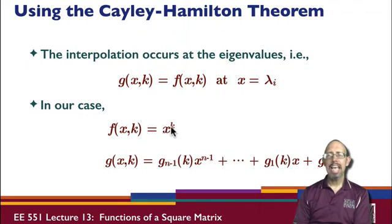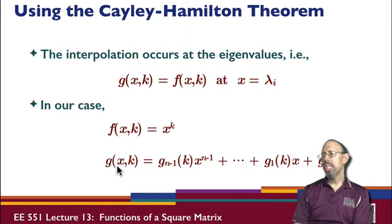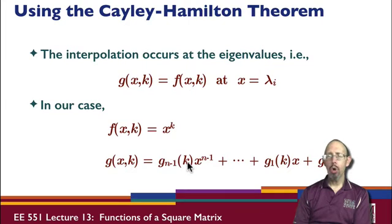Suppose the function we want to compute is x to the power k, like A to the k. Then g of x and k can be written as functions g that are functions of k only, and x as a polynomial up to the power n minus 1. That's what we would have. This is what we are going to look for in using the Cayley-Hamilton theorem.